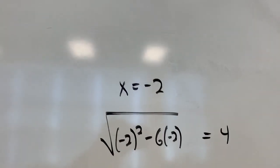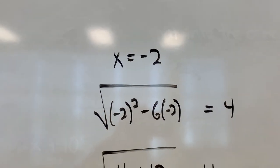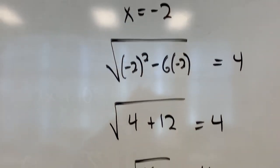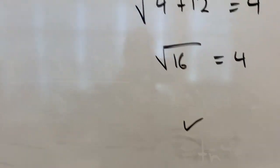I check negative 2. Square it. Again, careful with the negative signs, but I have 4 minus minus 12. So, 4 plus 12 is 16. Square root of 16 does equal 4. We're happy.